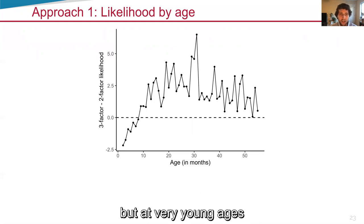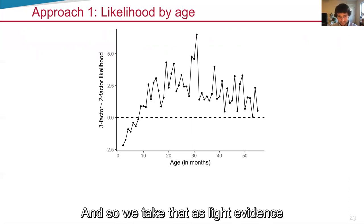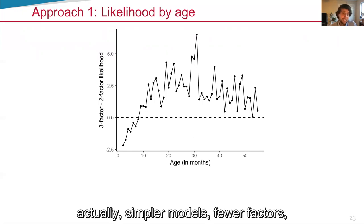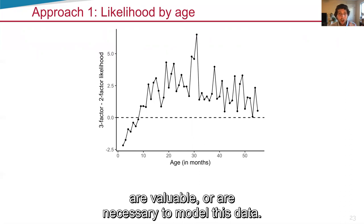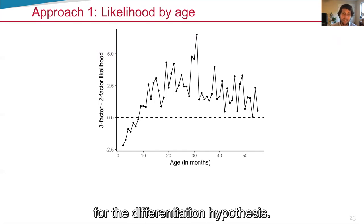But at very young ages, it's actually the two-factor model that's winning. And so we take that as light evidence that before 10 months of age, actually simpler models, fewer factors are valuable or are necessary to model this data. So we take this as light but interesting evidence for that differentiation hypothesis.